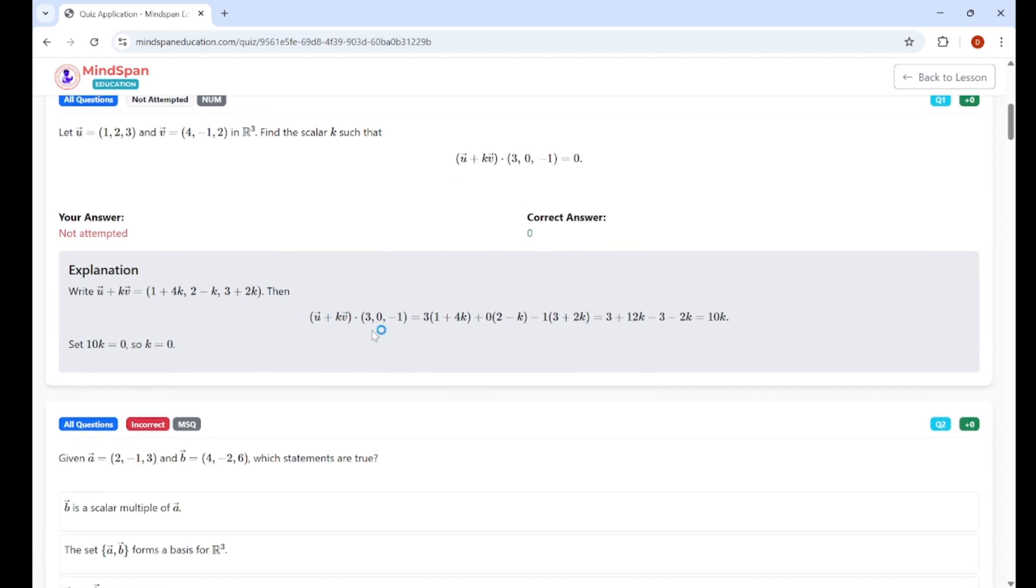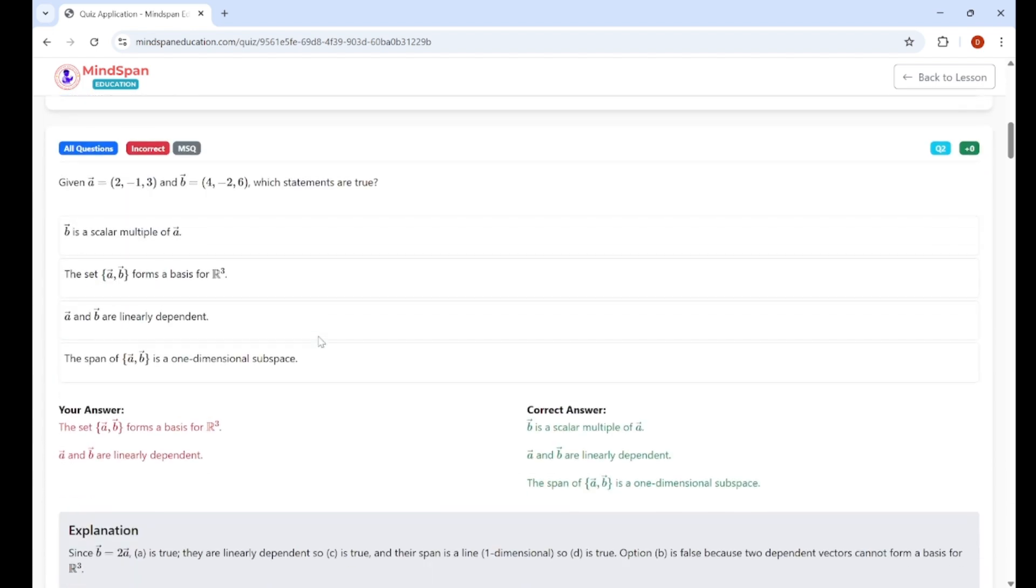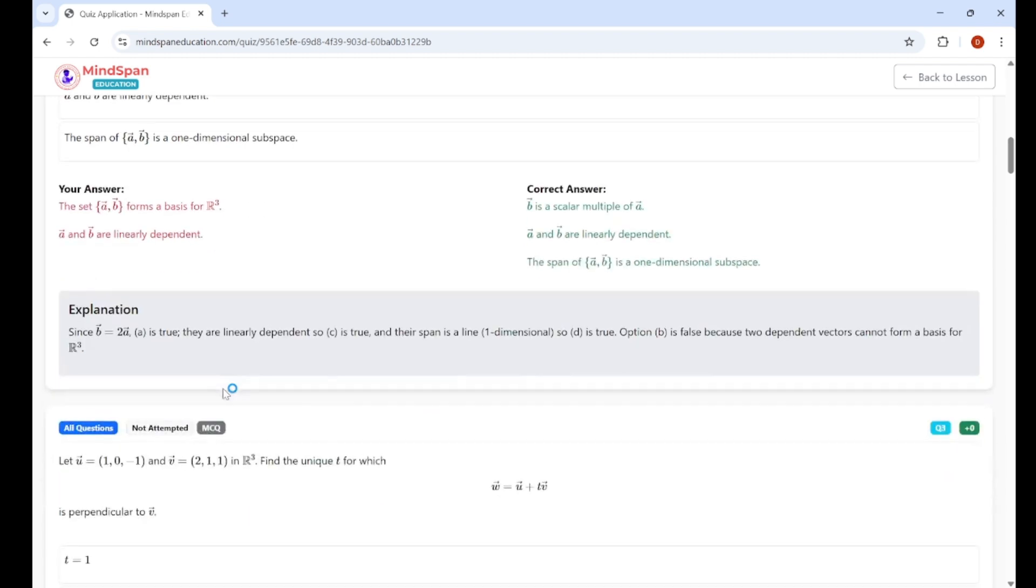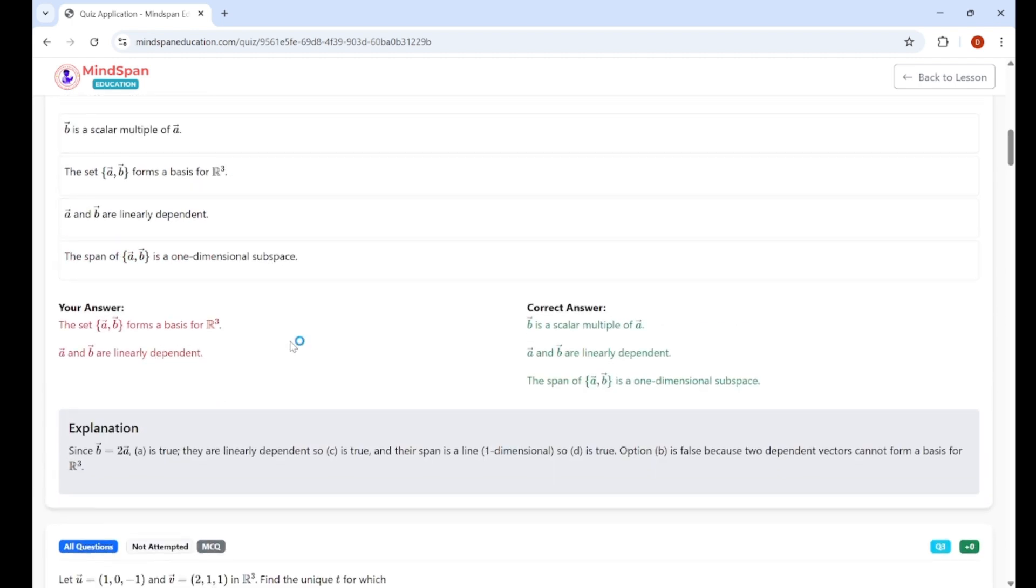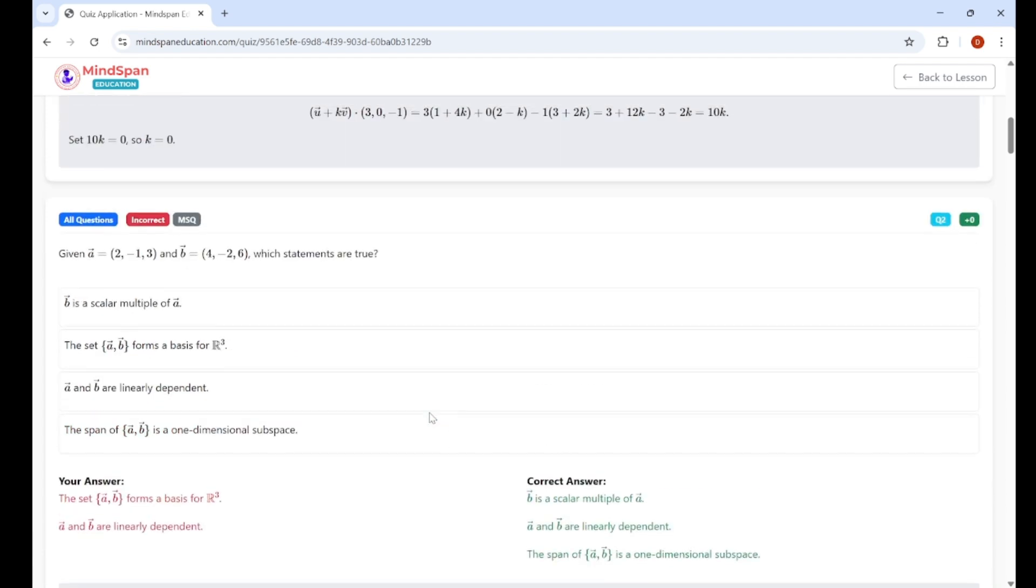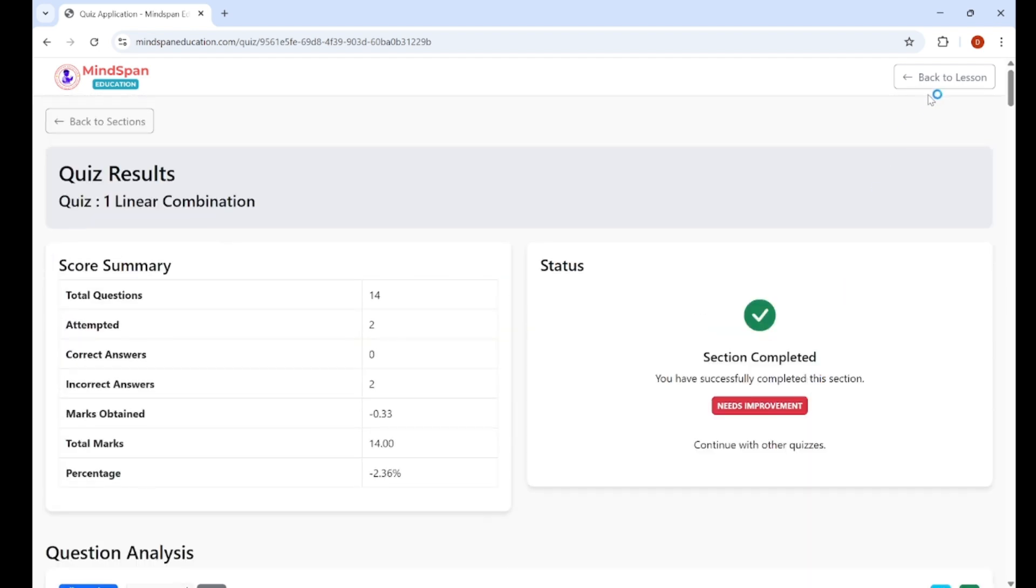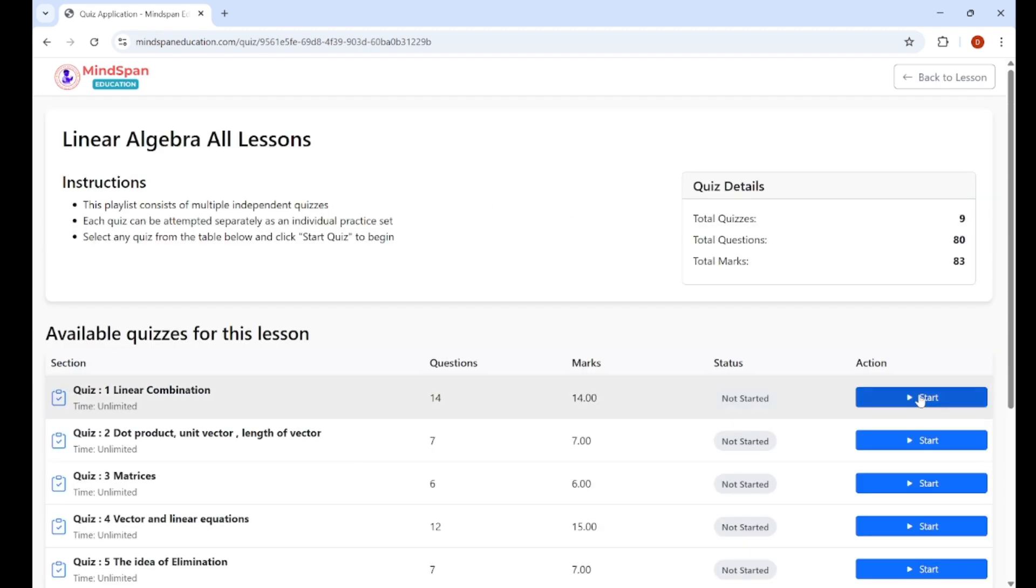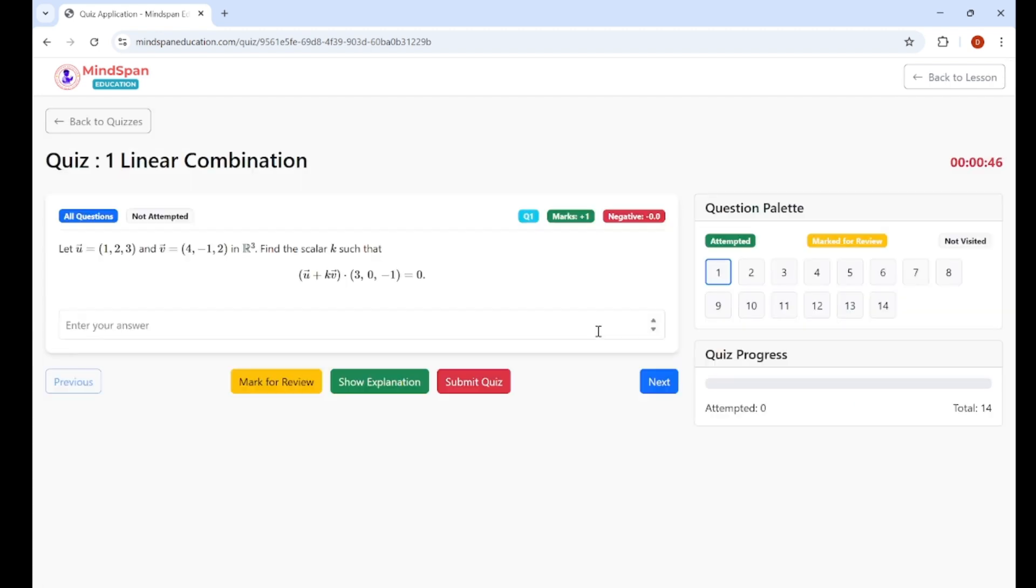Here question-wise details will be there - what was the question, what was the answer, and the detailed solution for each. Here you can see if you made any mistake, what mistake you made and what was the solution. Also you can attempt this multiple times. If you want to attempt again, you can attempt again. Later on if you want to practice linear combination again, you can attempt like this.